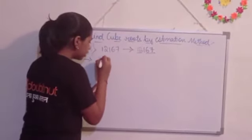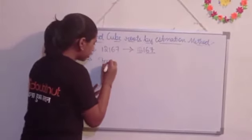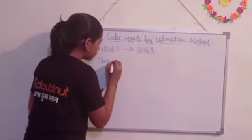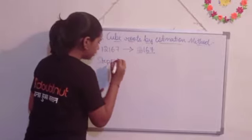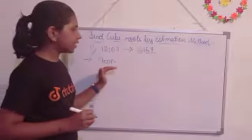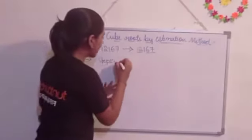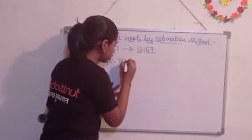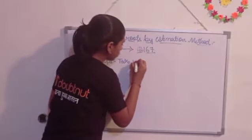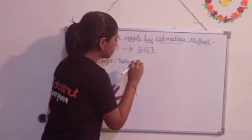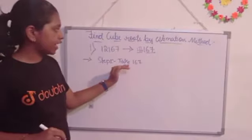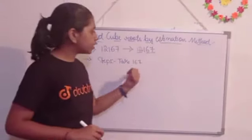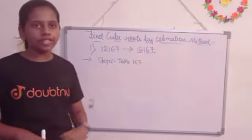So next, step 1: we are going to take 167. Here, 167 we are going to take, and then the unit digit of 167 is 7.